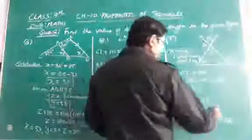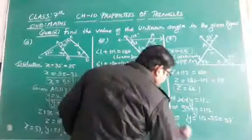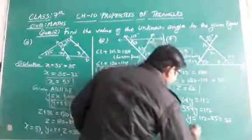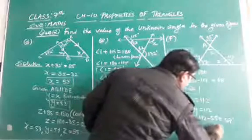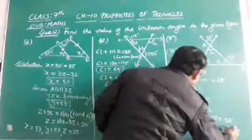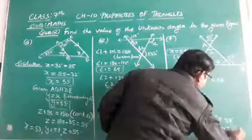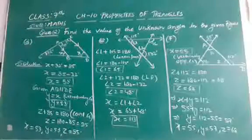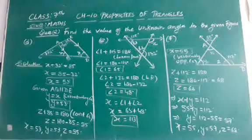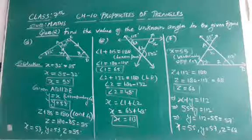So, we get x is 55, y is 57 and z is 68. So my dear students I am sure that you understood all these 3 questions thank you very much.